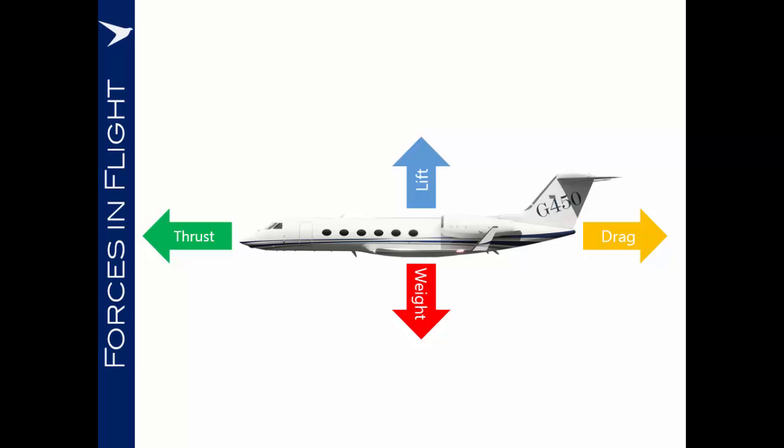Whilst the aeroplane is in straight, level, unaccelerated flight, these forces will all be in equilibrium. So thrust will equal drag, lift will equal weight, and the aeroplane will not speed up, slow down, or manoeuvre other than to fly in a straight line at a constant speed.